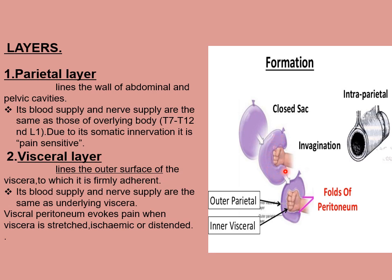Organs are not present in the peritoneal cavity; these are present within the abdominal cavity. Here are the two layers of the peritoneum — the visceral or inner layer and the outer or parietal layer. The parietal layer lines the wall of the abdominal and pelvic cavities, and its blood supply and nerve supply are the same as those of the overlying body wall, from T7 to T12 and L1. Due to its somatic innervation, it is a pain-sensitive layer. The visceral layer lines the outer surface of the viscera to which it is firmly adherent; its blood supply and nerve supply are the same as the underlying viscera. Visceral peritoneum evokes pain when the viscera is stretched, ischemic, or distended.